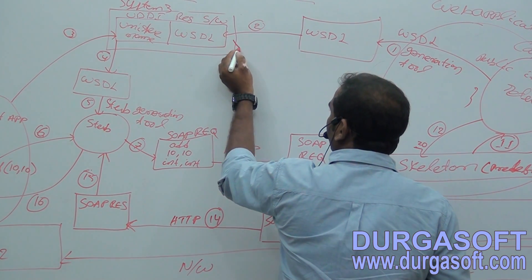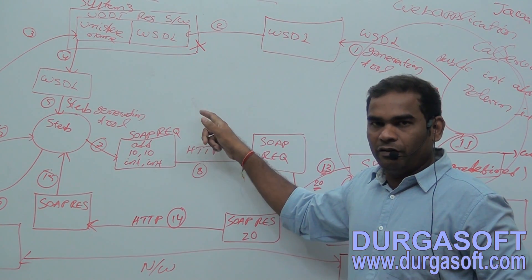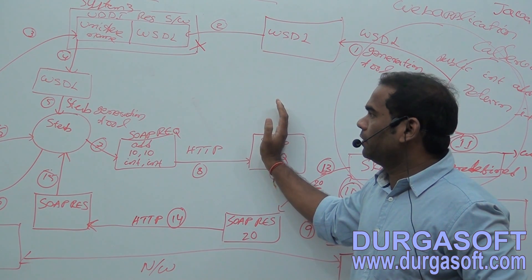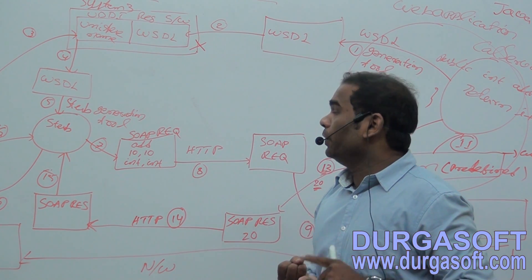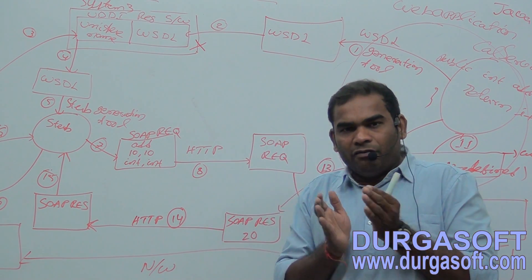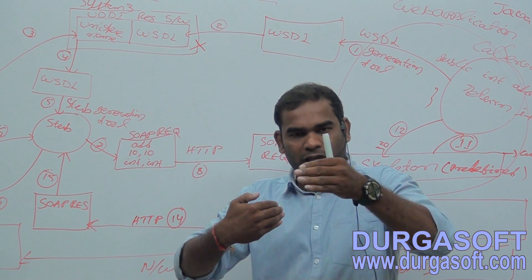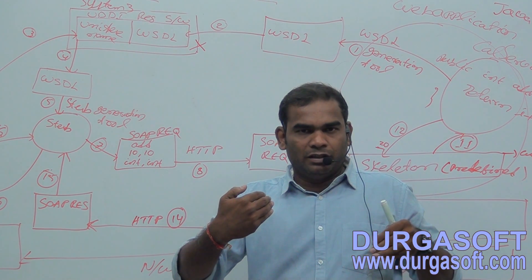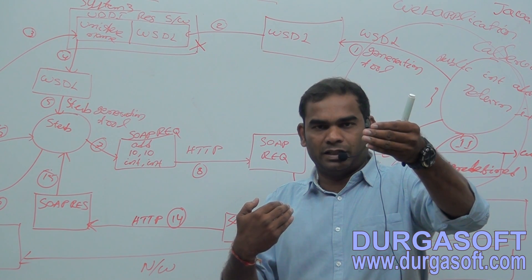The UDDI registry is an optional software in web service architecture. Instead of putting the WSDL file into the UDDI registry, we can directly share this WSDL file to the client through an email attachment. The question is: when do we use the UDDI registry and when do we share directly? If we have one-to-one, one-to-two, or one-to-three communication — meaning one service with maybe three clients — we can directly share the WSDL file through email.